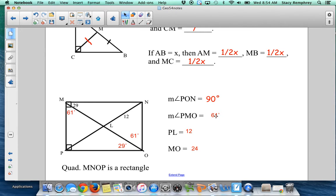Angle PMO is going to be 61 degrees. I know that because this is 29. In black that was told to me. So 90 minus 29 gives me 61.